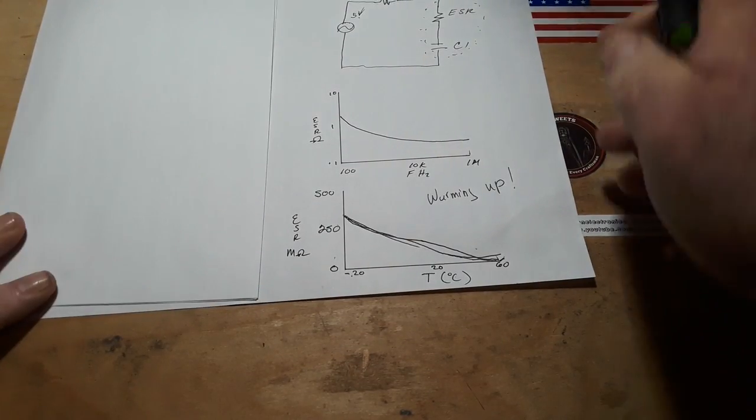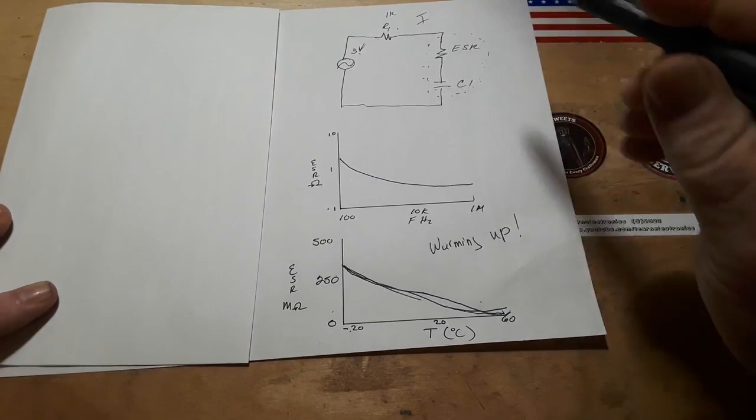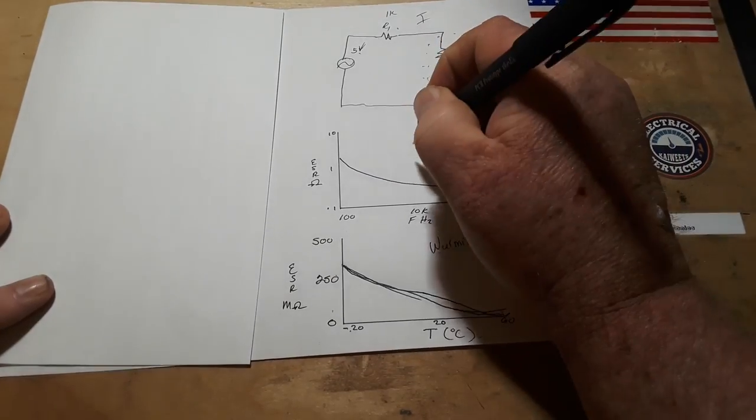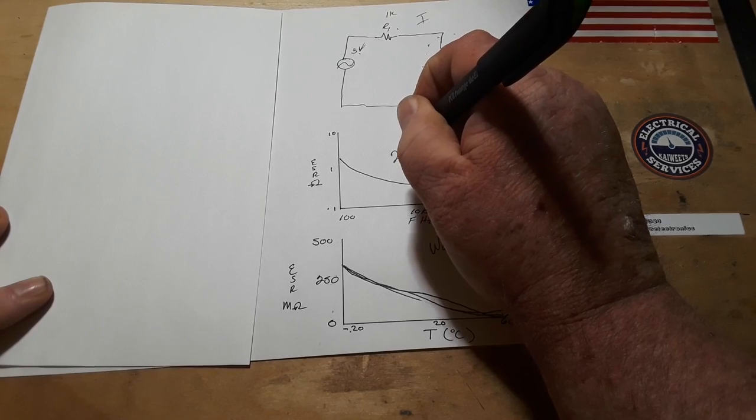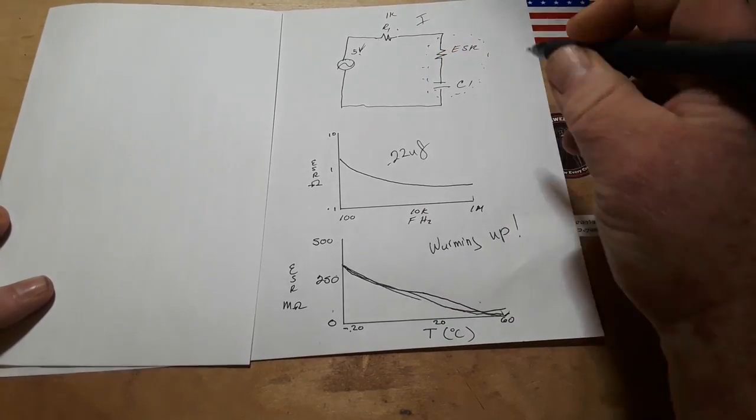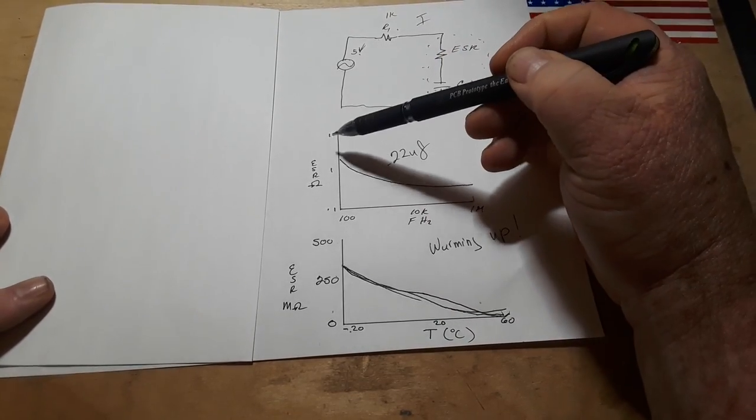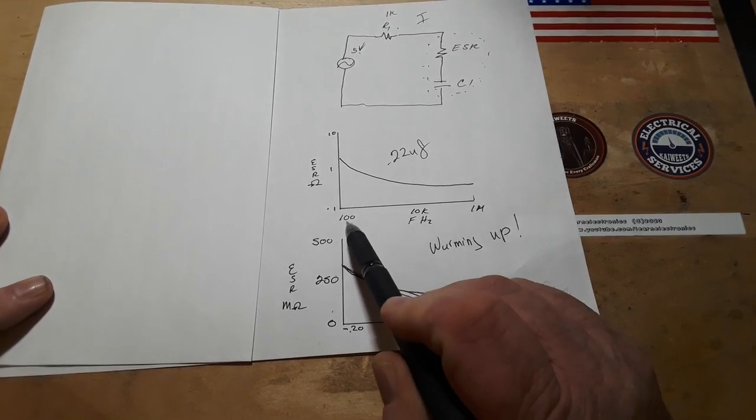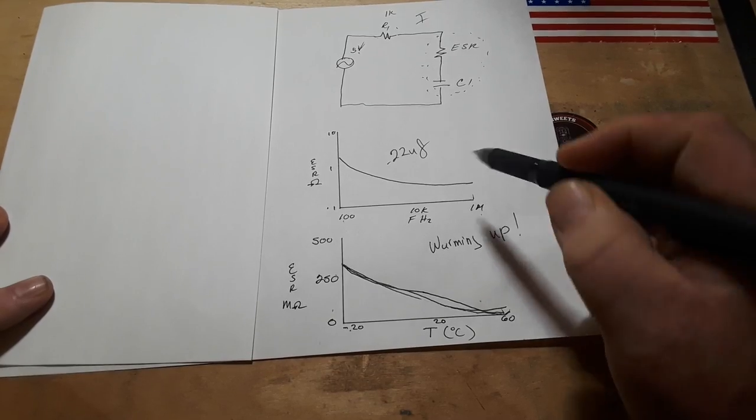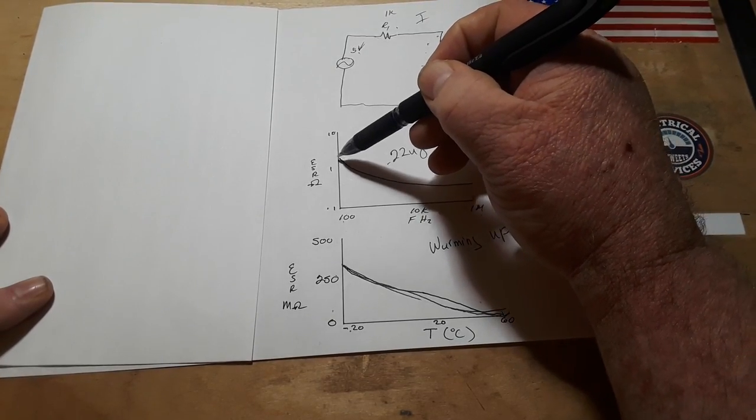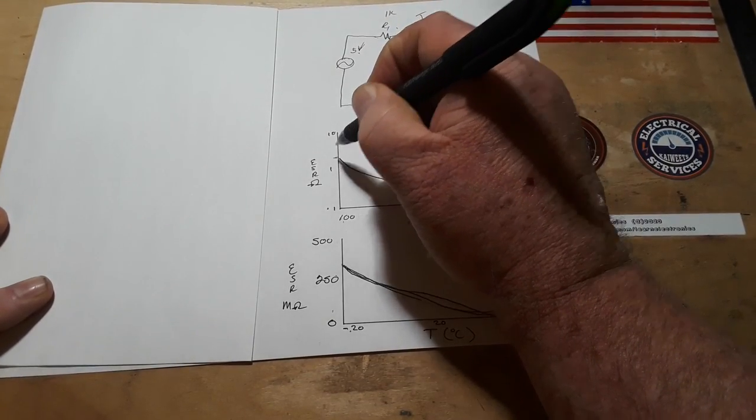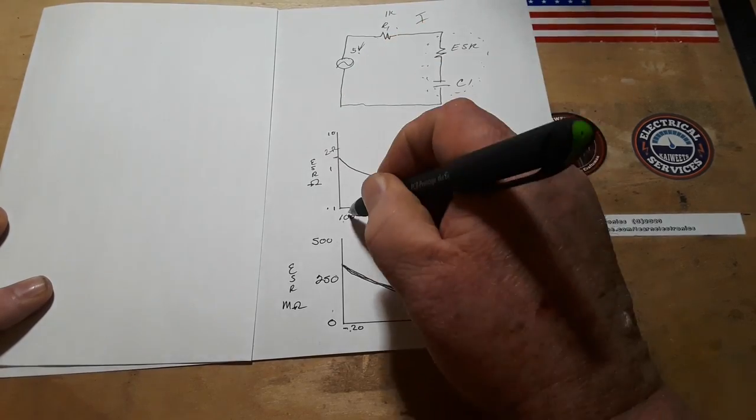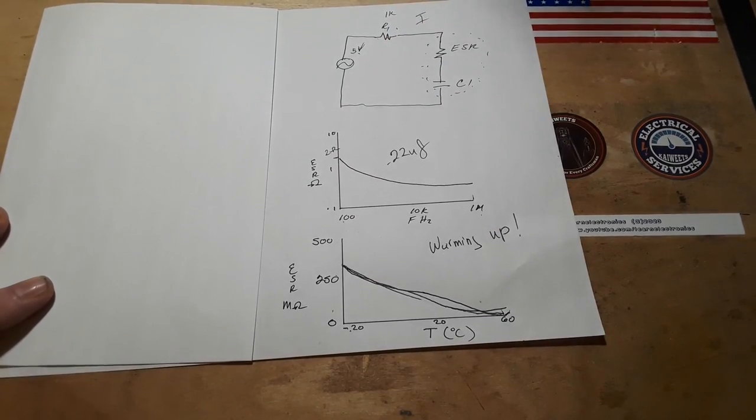The next thing that we need to talk about is ESR being frequency dependent. If we take like a 0.22 microfarad capacitor. Here we have an ESR in ohms maximum of 10, minimum 0.1 ohm, a frequency of 100 hertz to 1 meg.